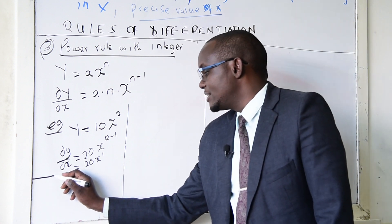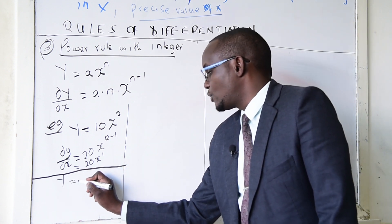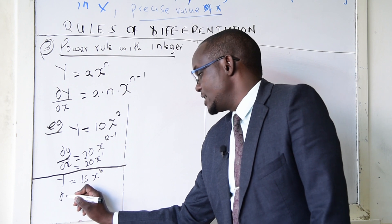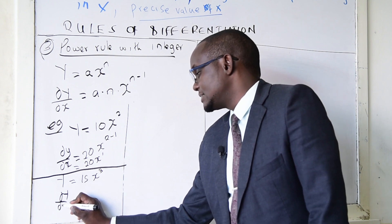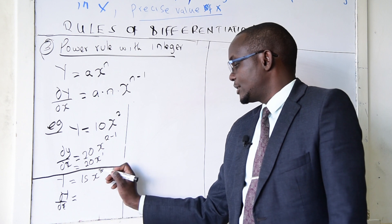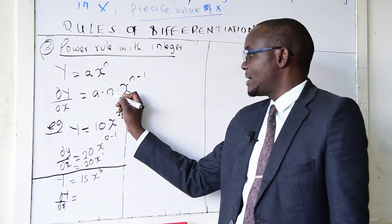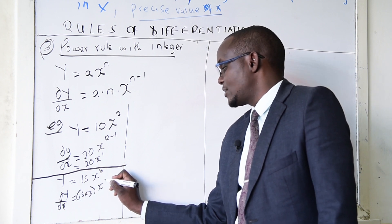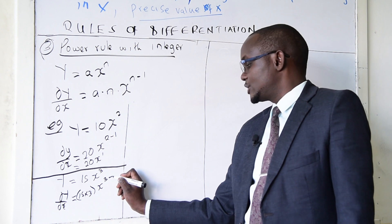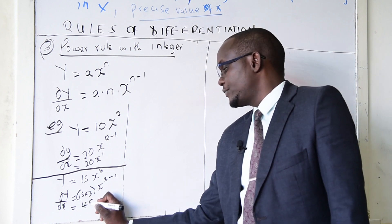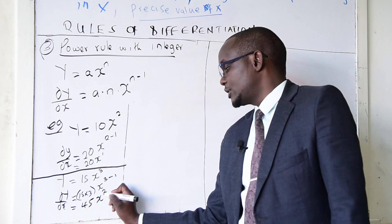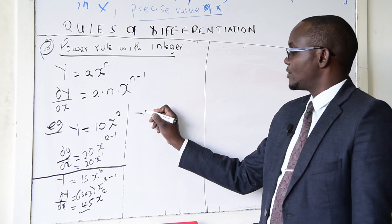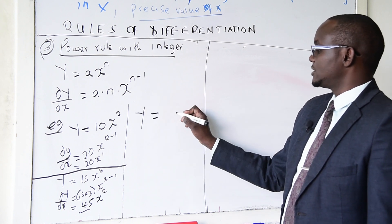Another example: y equals 15x^3; find dy/dx. The integer is 15, multiply by the power 3: 15 times 3 is 45. The new power is 3 minus 1, so the answer becomes 45x^2.